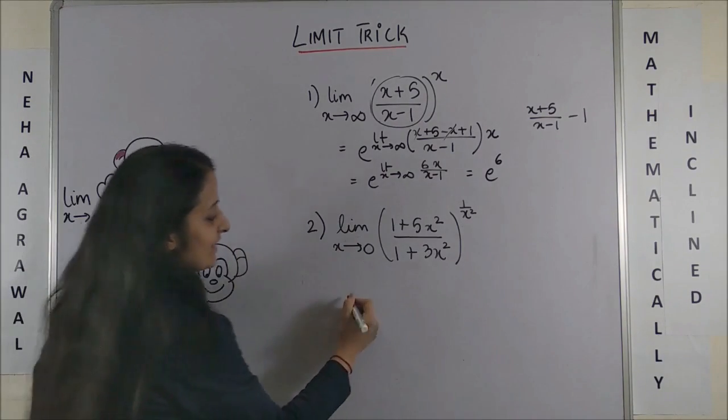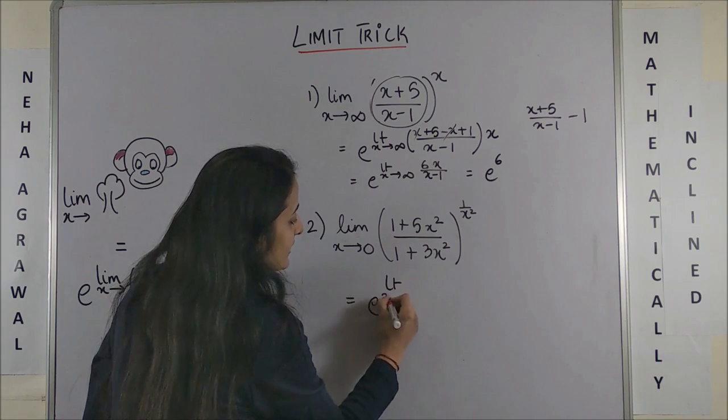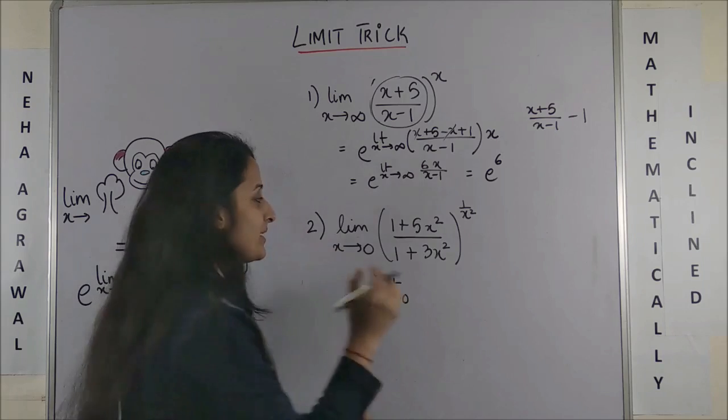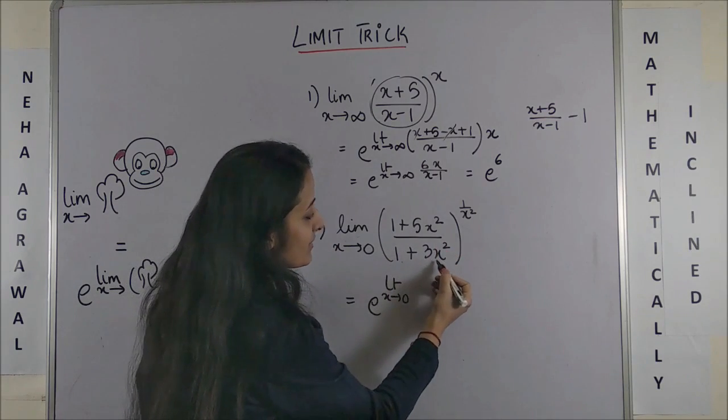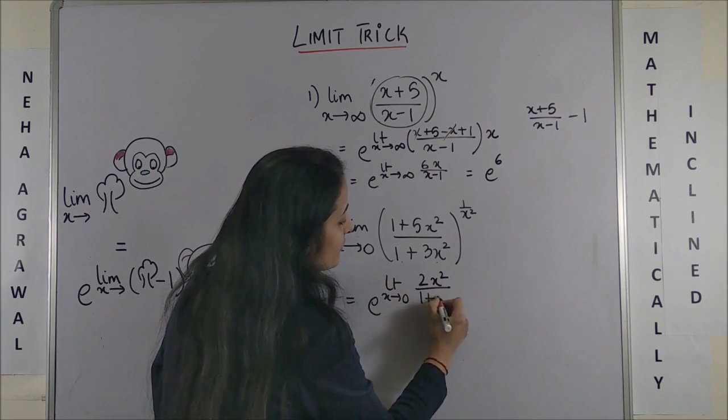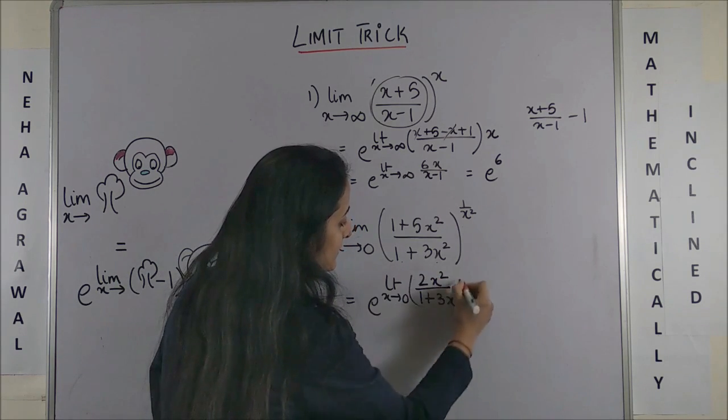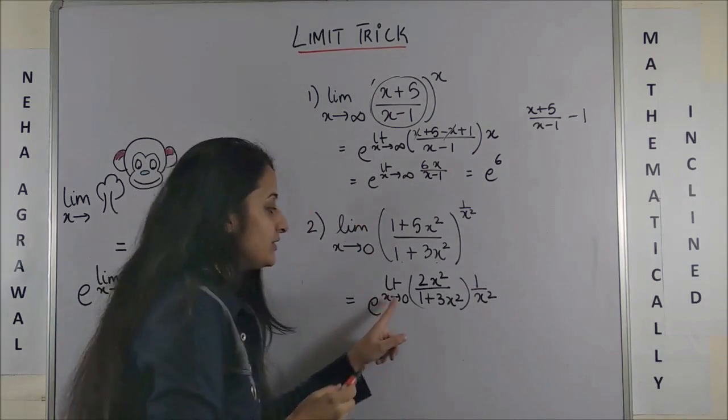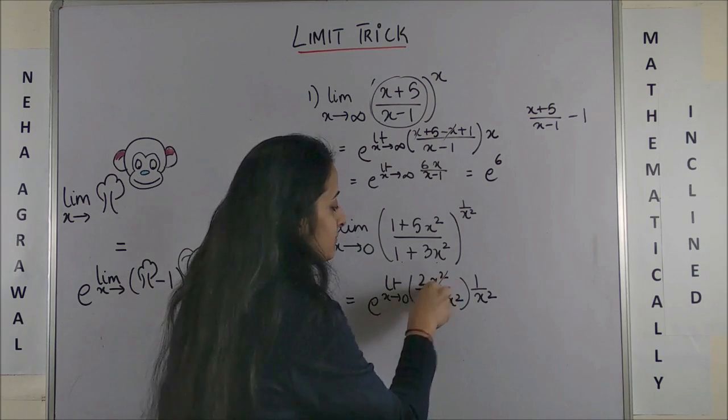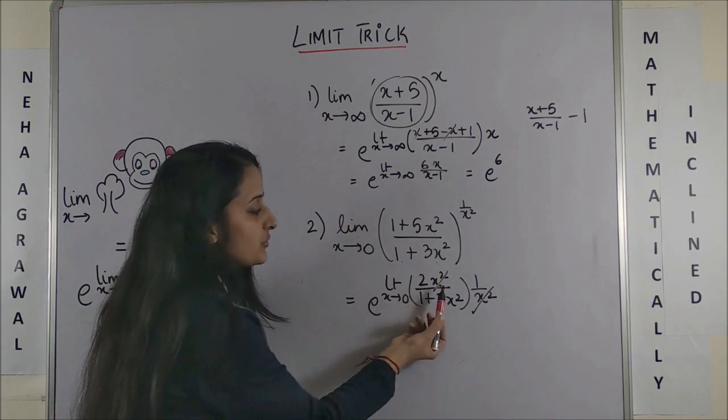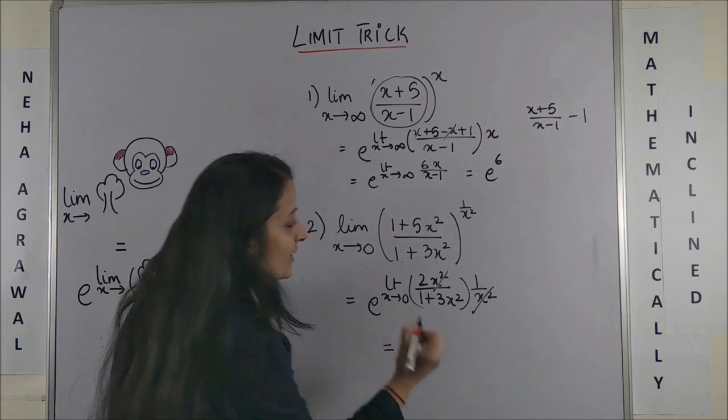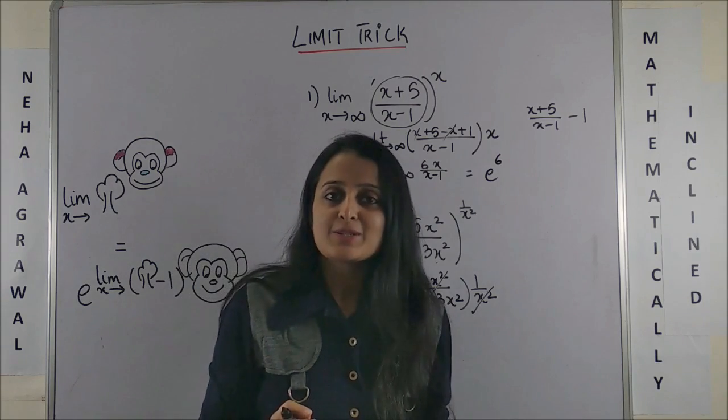Same way for the second one: again it is e to the power limit extending to zero, cut down this tree. This time I'm going to do it mentally because (1+5x²) minus 1 minus 3x² will give me 2x² upon (1+3x²) times (1/x²). Now this time it's extending to zero, so don't try to apply that technique, but it's simple. You cancel this out and now substitute x as zero everywhere.